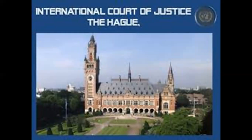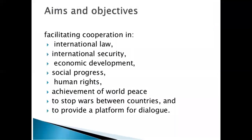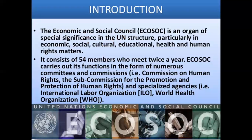The International Court of Justice is the principal judicial organ of the UN. It began working in 1946 and has 15 judges elected for 9 years by the General Assembly and Security Council. After every few years, elections are held for one-third of the seats. Its functions include facilitating cooperation in international law, international security, economic development, social progress, human rights, achievement of world peace, and providing a platform for dialogue to stop wars between countries.